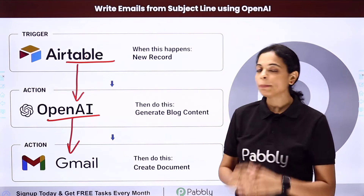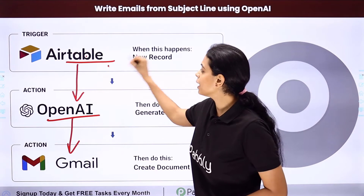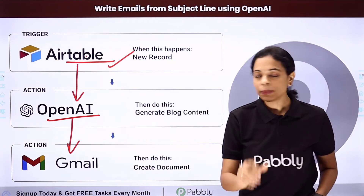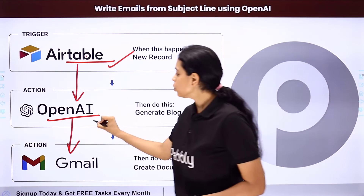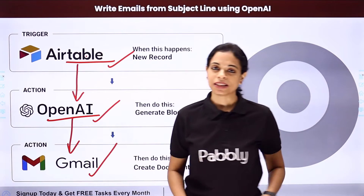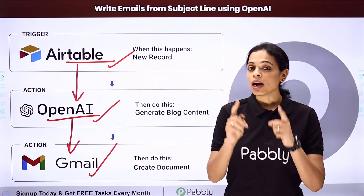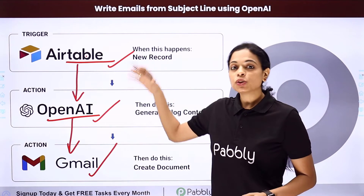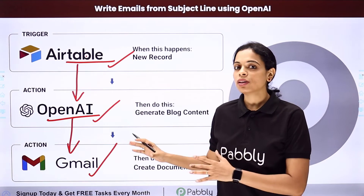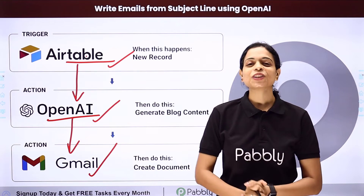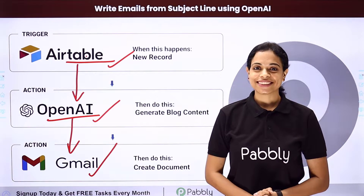Here your trigger application would be Airtable, and your action applications would be OpenAI and Gmail. Let me take you to my screen to understand how to automate and integrate this entire process.